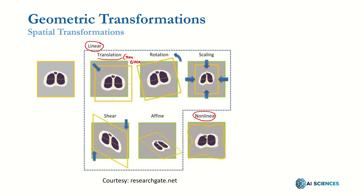There is a trick to convert translation to a linear transformation using homogeneous coordinates. Due to translation, the general affine transformation is also nonlinear, but they are normally referred to under the umbrella of linear transformations because there is a way to convert them. I will explain what we mean by linear and nonlinear transforms.